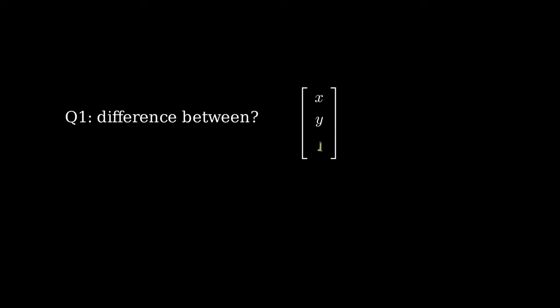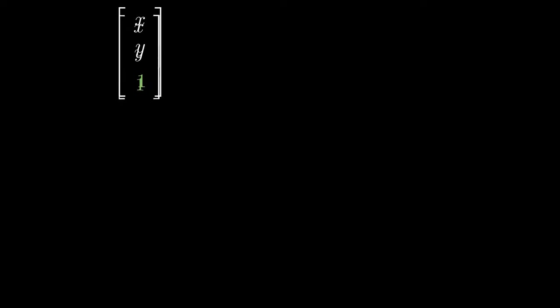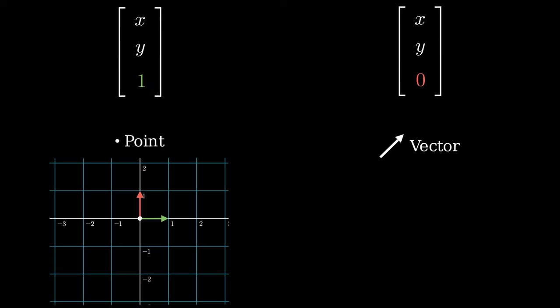Okay, now you have a better understanding on what and why. Let me unveil the first question: What's the difference between 0 and 1? The answer to this is 1 refers to a point, 0 refers to a vector.